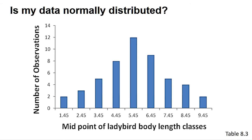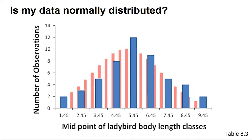One common approach can be illustrated using the data from Table 8.3, shown in the bar chart. We can calculate a mean and standard deviation from this data, and then predict the distribution of values we should get if the data is normal, as we can see from the underlayed bar chart in pink. We can then perform a chi-squared or similar test to see if our values are consistent with those expected values.